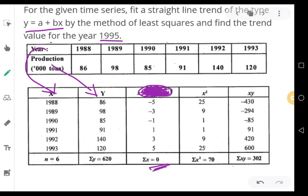There is a simple mechanism to assign the value of x. Go to the question and see the number of years given. In this case it is 1, 2, 3, 4, 5, and 6. That means an even number of years are given. When even number of years are given, you have to find the middle most two years. For those two middle most years, assign minus 1 and plus 1.